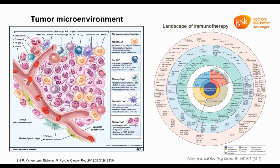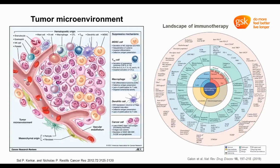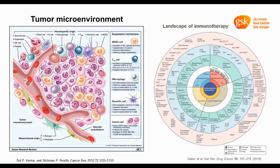First, let's have a look at what the tumor microenvironment is. The tumor mass consists not only of a heterogeneous population of cancer cells, but also a variety of resident and infiltrating host cells, secreted factors, and extracellular matrix, collectively known as the tumor microenvironment. Blood vessels supply oxygen and nutrients to the tumor. Along the vessels, there are endothelial cells, fibroblasts, and pericytes. Innate and adaptive immune cells, like macrophages, NK cells, granulocytes, and lymphocytes, are frequently found in the TME. These cells secrete chemokines, cytokines, and interleukins that regulate immune surveillance and tumor suppression.